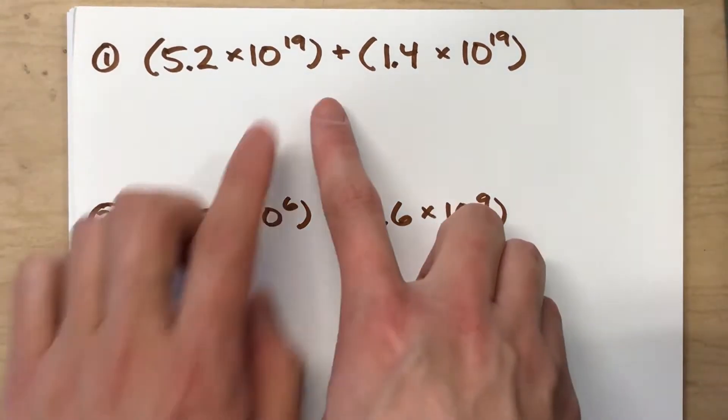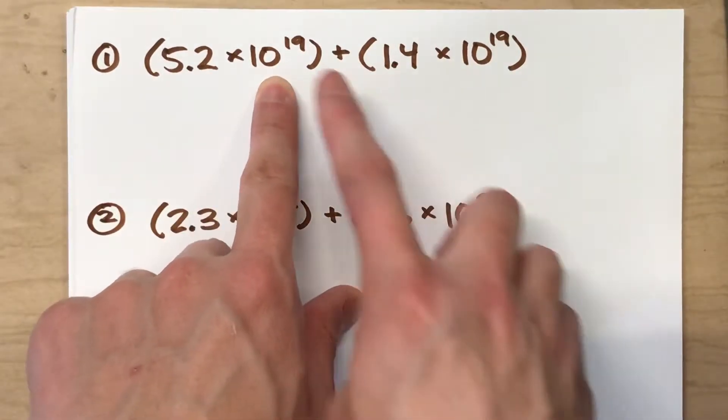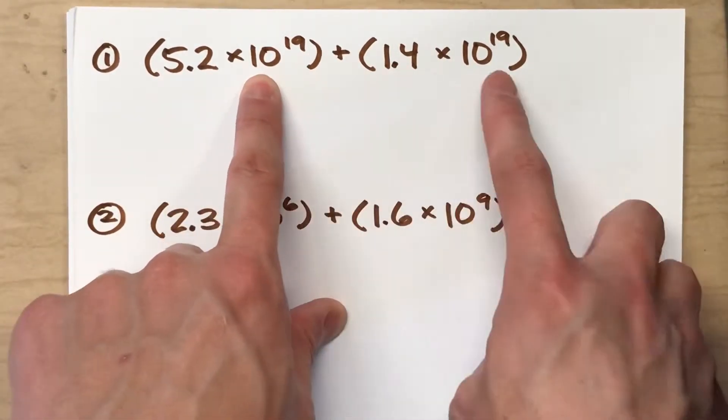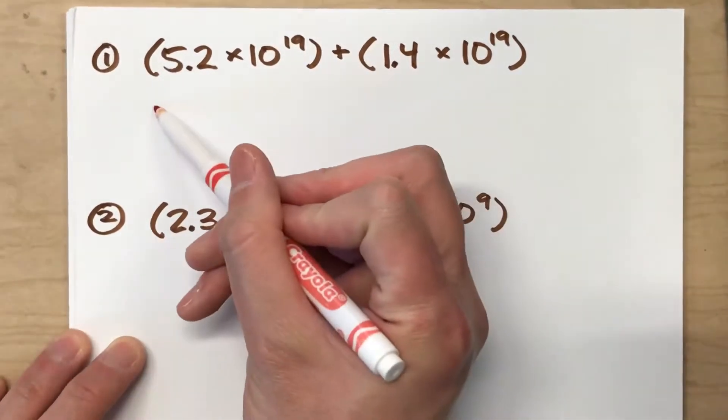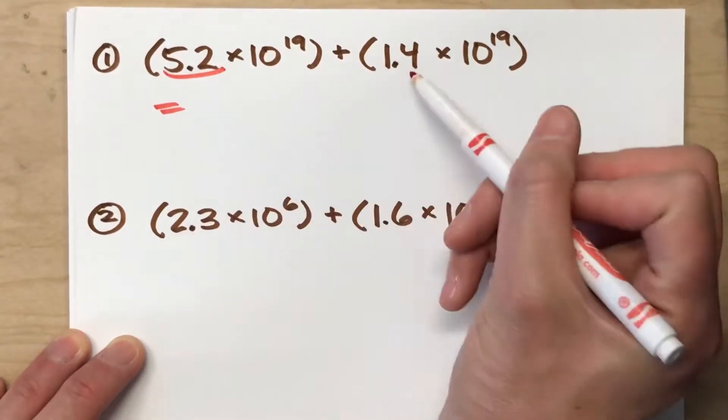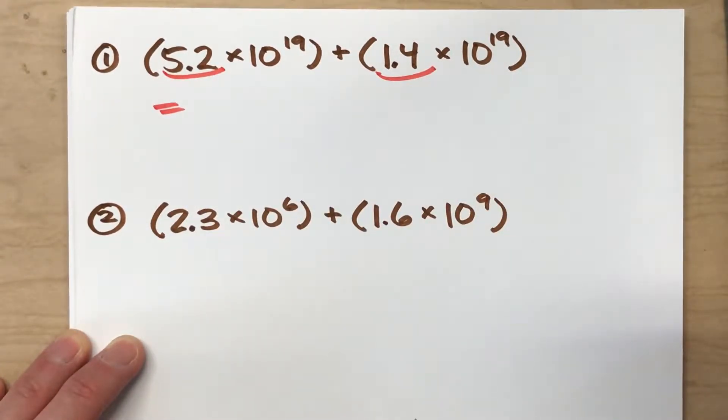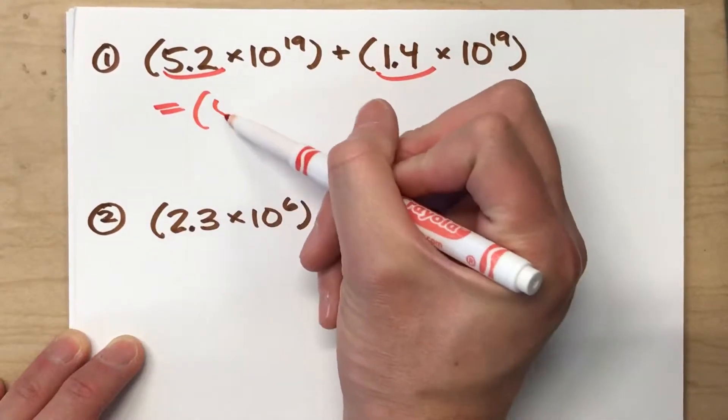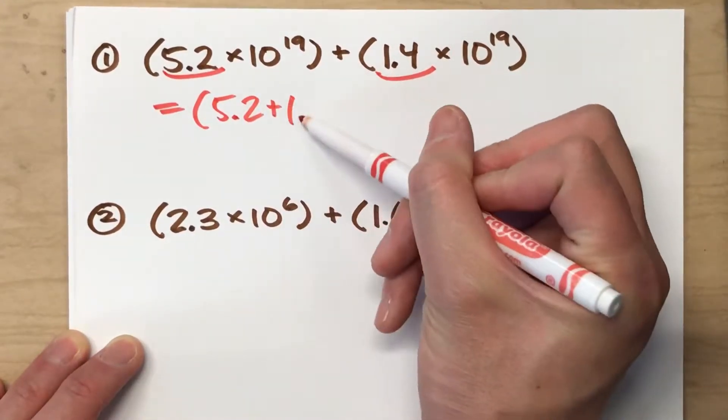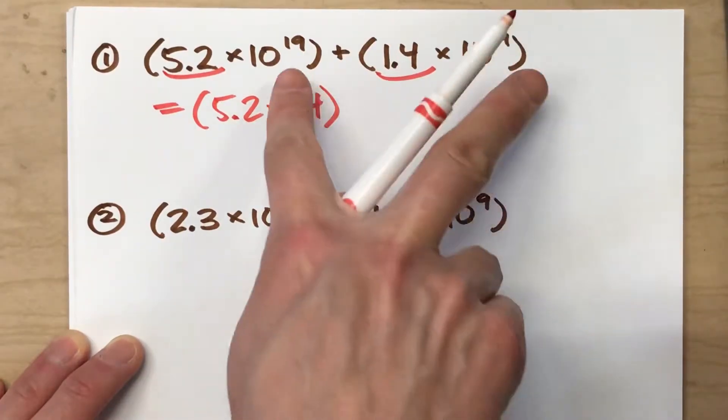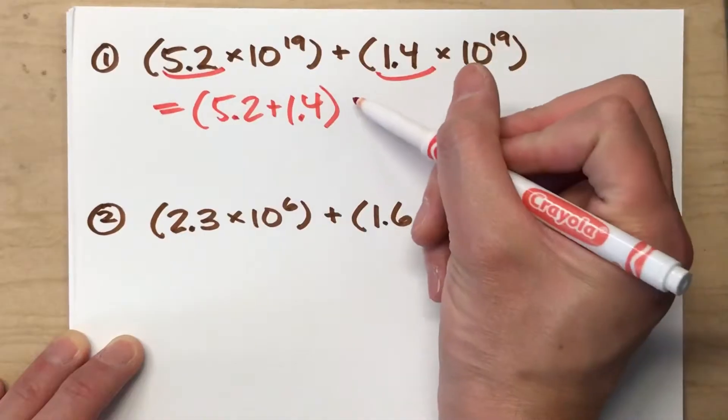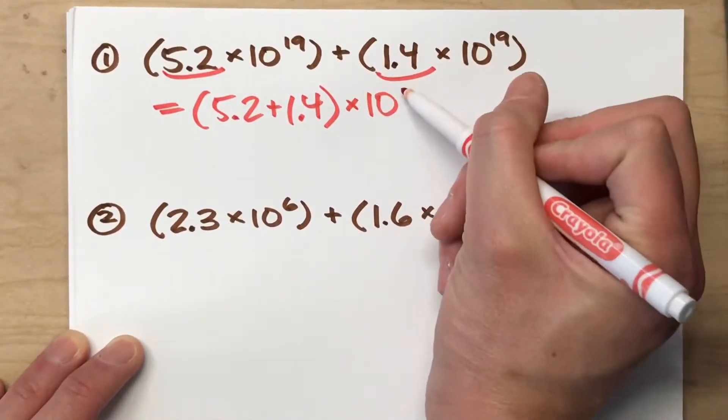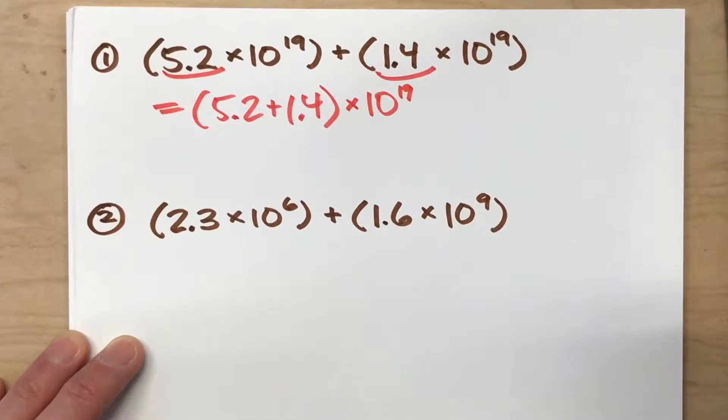What we learned was when we have numbers in scientific notation with the exact same power of 10, it's actually a very easy problem to solve. Because you can take the two coefficients of the scientific notation and add those together, and since they're both being multiplied by 10 to the 19th power, once I add these together I can multiply that answer times 10 to the 19th power and that'll get me my answer in scientific notation.